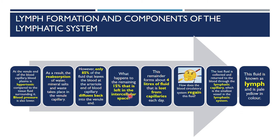The remaining 15 percent still in the intercellular space forms about four liters of fluid that is lost from the capillaries each day. This lost fluid is collected and returned back to the blood through the lymphatic capillary — the smallest vessels in the lymphatic system. This fluid is known as lymph — the fluid flowing in the lymphatic system. We call it lymph, and it is pale yellow in color.